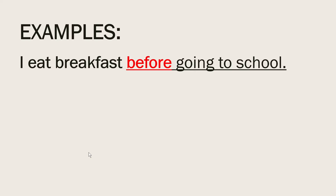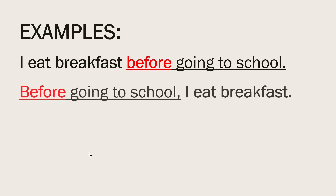It leads to the dependent clause. Therefore, the entire dependent clause in this sentence is 'before going to school.' And the remaining clause, 'I eat breakfast,' is the independent clause. Dependent clause and independent clause can be written interchangeably. But do not forget to put a comma right after the dependent clause if it starts the sentence. For example: 'Before going to school, I eat breakfast.'